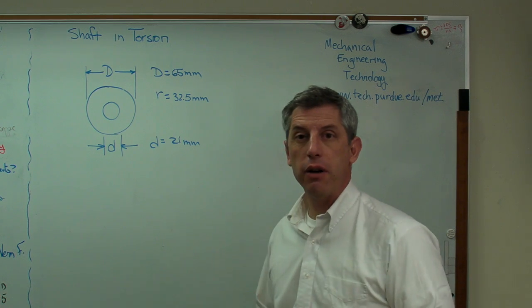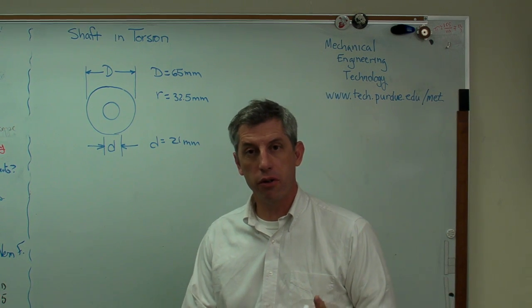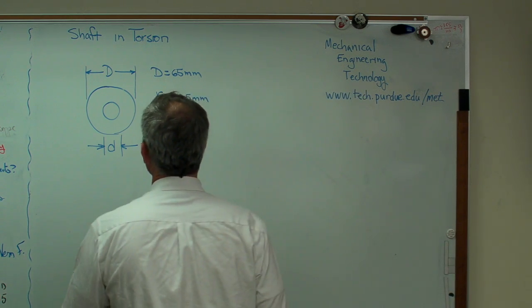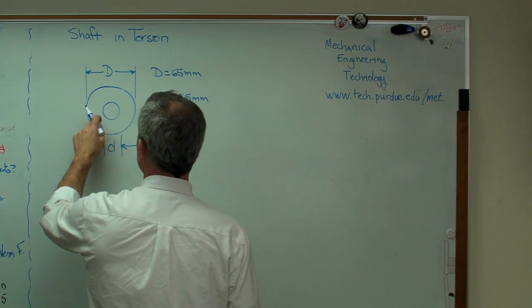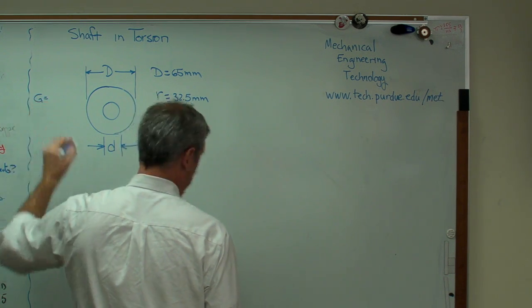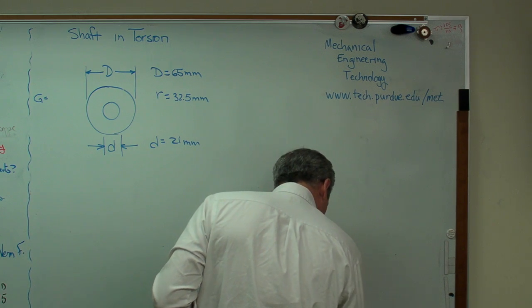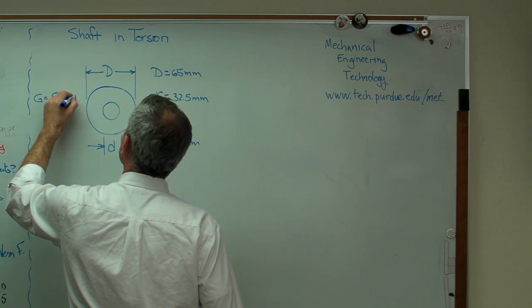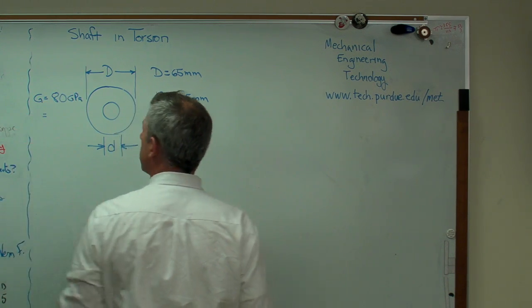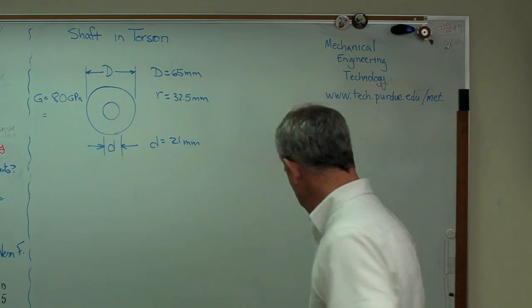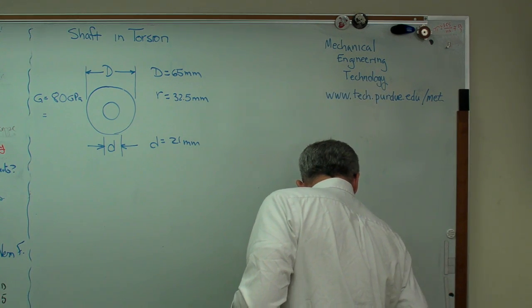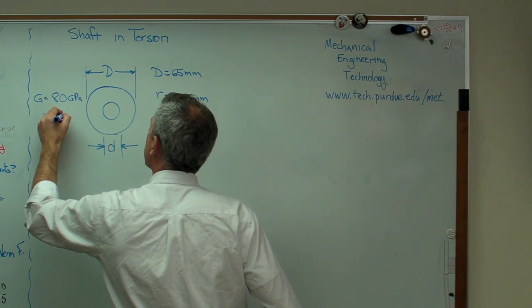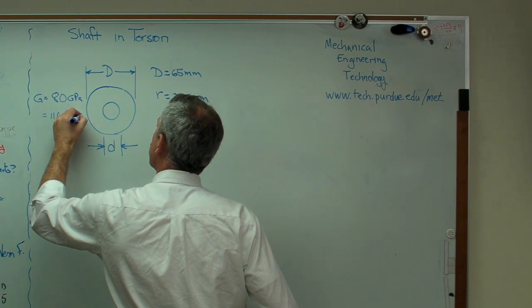Now, let's figure out two things. Let's figure out the shear stress and let's figure out the torsional deformation, the twist. So I'm going to need to know a couple of things here. I'm going to need to know what material that is. That's steel. So G, for steel, is 80 gigapascals. And if you're doing this in English units, the United States still works in English units a lot, even though we shouldn't, that's 11.6 times 10 to the sixth PSI.